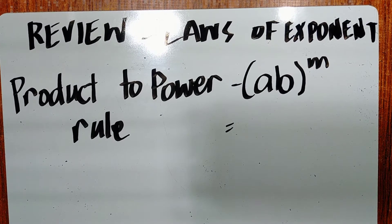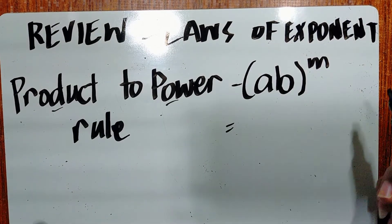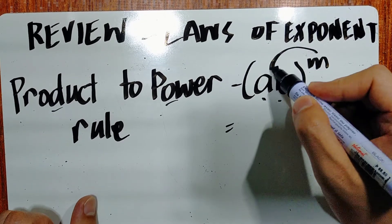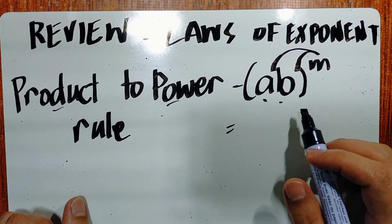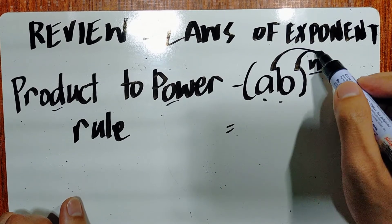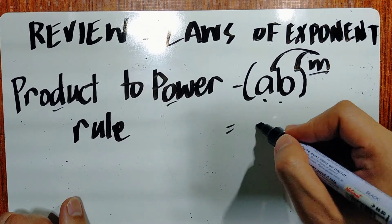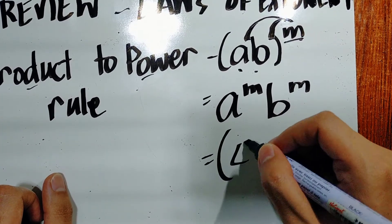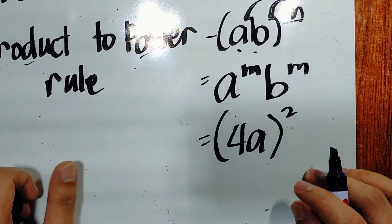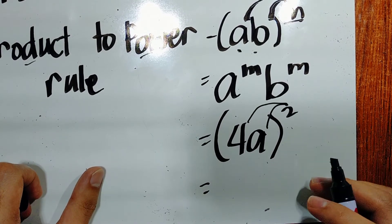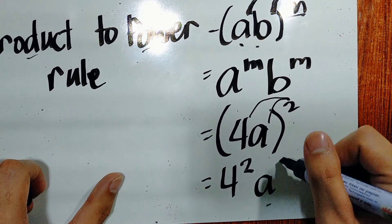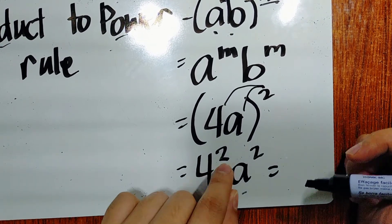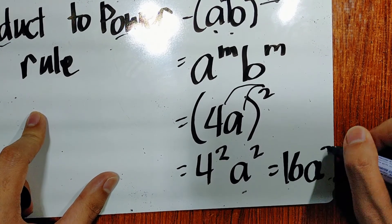Another rule is the product to power rule. For the quantity ab raised to m, we distribute the exponent to each variable inside, giving a raised to m times b raised to m. For example, we have 4a raised to the power of 2. Distributing: 4 squared times a squared. We simplify 4 squared as 16, so the answer is 16a squared.